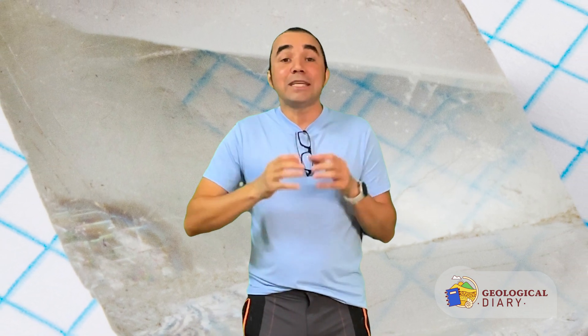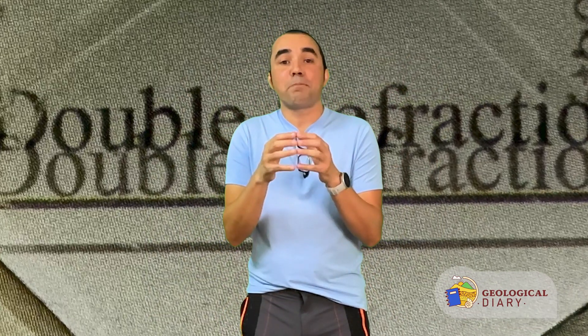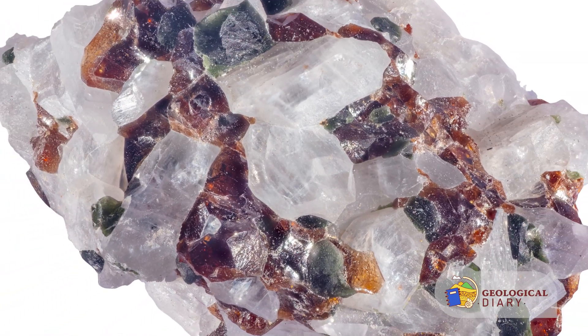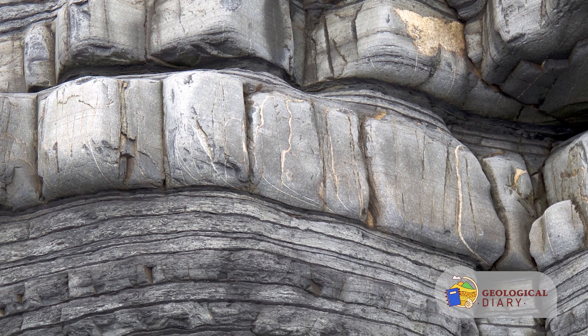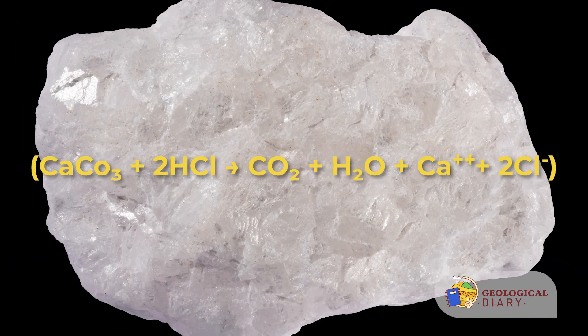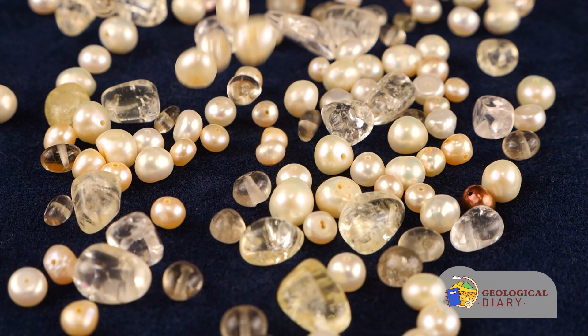One fascinating property is birefringence, or double refraction — a special optical property that some specimens of transparent calcite possess. For example, when we place this sample of Icelandic calcite over a printed text, the letters appear twice. Another very useful property when identifying carbonates in sedimentary rocks is effervescence or fizzing — it occurs when a low-concentration solution of hydrochloric acid contacts a fresh broken mineral surface on carbonates. This chemical reaction releases carbon dioxide gas, thus helping to identify calcite.